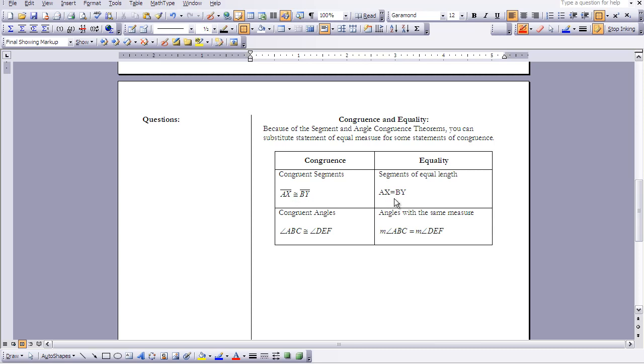But we're also saying that is also the same as saying that the length is the same. So the notation for that would be to say AX equals BY. Because we know that when we have two points next to each other, that means distance is the same. So this would be two corresponding statements that you could have. One if you want to show congruence, one if you want to show equality.